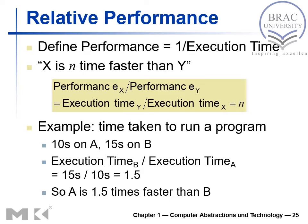Let's see an example. We have two systems, system A and system B. Time taken to run a program on system A is 10 seconds and on system B is 15 seconds. So the ratio — execution time of B over execution time of A — is 1.5. So A is 1.5 times faster than B.